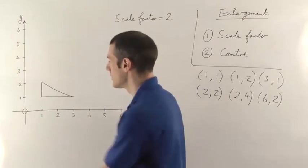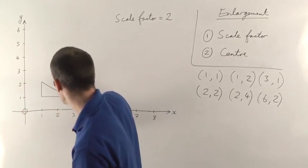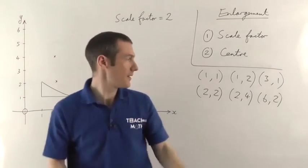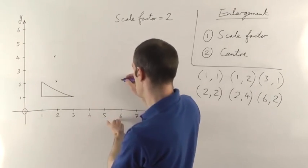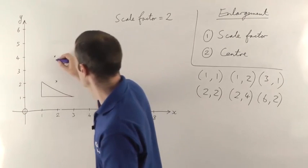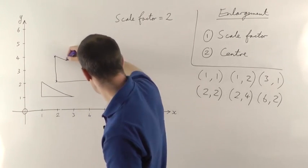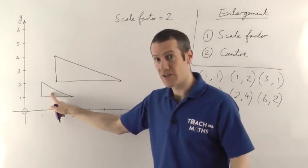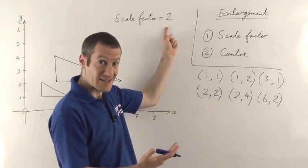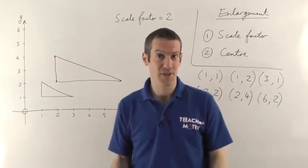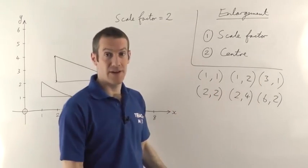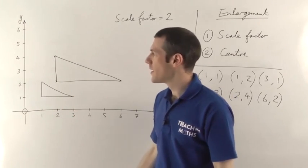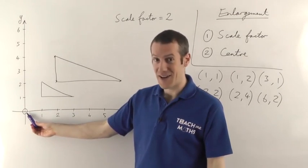We've got 2 comma 2, so you go to point (2, 2). 2 comma 4 is up here. And 6 comma 2 is over here. You join up your three points and you get your enlarged triangle. All the lengths on this triangle will be twice as long as on the original triangle because the scale factor is 2. So that's the easy way — you just take the coordinates, times them by the scale factor. That will work for any shape at all, as long as you know the coordinates of the corners, but only if the centre of enlargement is the origin.